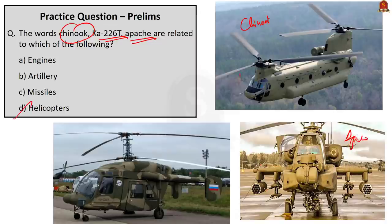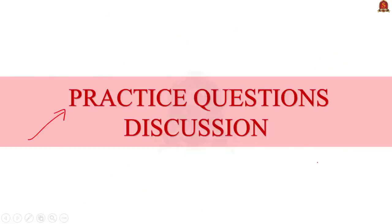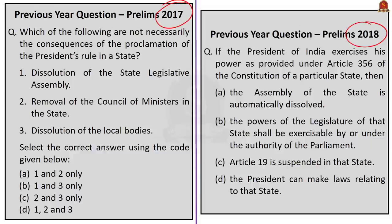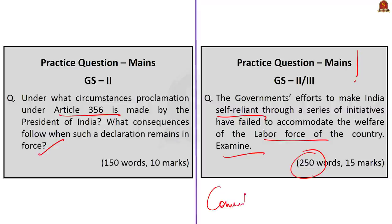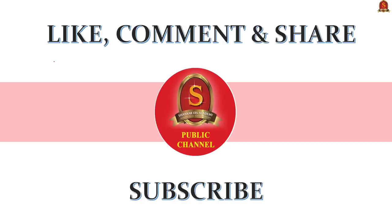We have arrived at the last part of today's video — the practice questions discussion session. Two previous year questions on Article 356 are given; try to answer them based on today's discussion and post your answers in the comment section. If unable to find answers, the PDFs will be provided via the link in the description and comment section. Two mains questions are also given: first, under what circumstances is a proclamation under Article 356 made, and what consequences follow? Second, examine whether the government's efforts to make India self-reliant have failed to accommodate the welfare of the labor force — write in 250 words. With this, we conclude today's news analysis. If you find this session resourceful, click the like button, share your appreciation in the comment section, and don't forget to subscribe to our YouTube channel.